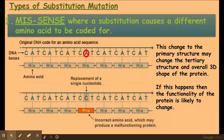A missense mutation is a type of substitution mutation where the change codes for a different amino acid. As you can see here, the A has changed to C and now codes for a different amino acid — it's gone from His to Pro. It might help to look at the codon coding wheel to understand this in more detail. Because only one amino acid has changed, it's not likely to have a massive impact on overall protein functionality, but it could do.